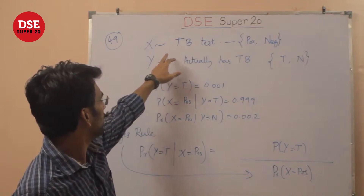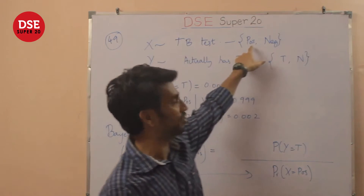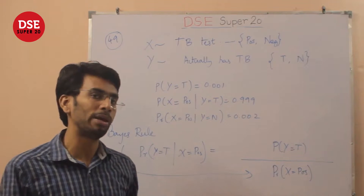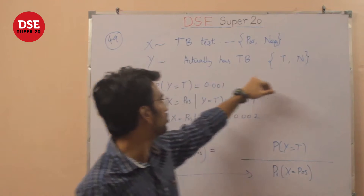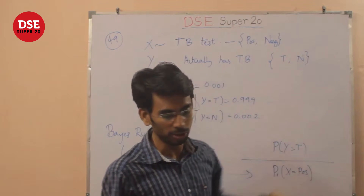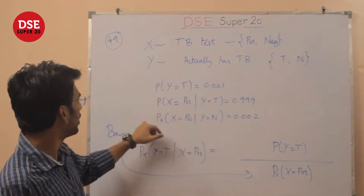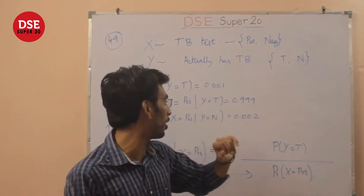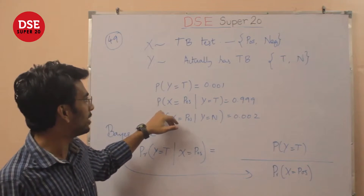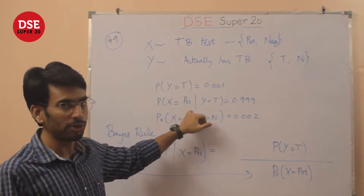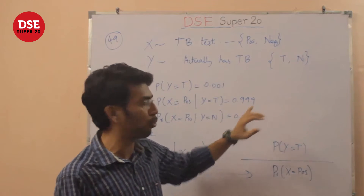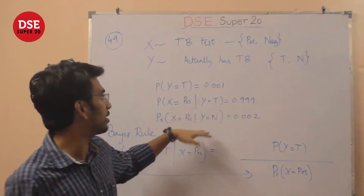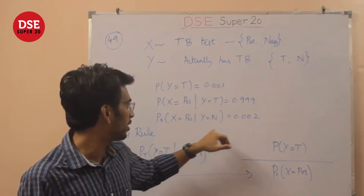Let's represent the outcome of the test by a random variable x — it can either be positive or negative. A person can actually have TB or may not have TB. The probability that a person actually has TB in the population is 1 out of every 1000, that is 0.001. The probability that the test results positive given the person actually has TB is 0.999, which is quite accurate. And the probability that x is positive given the person does not have TB — a false positive — is 0.002.